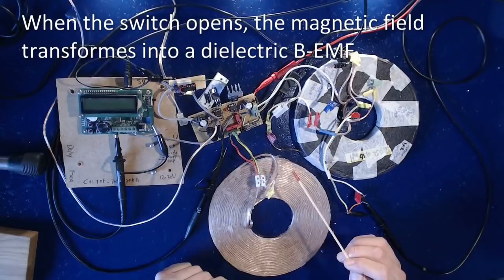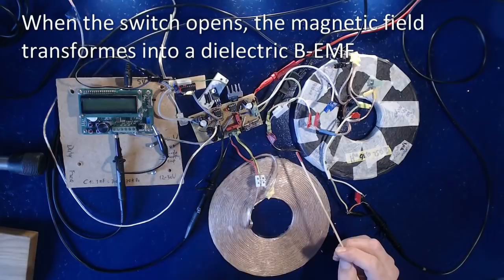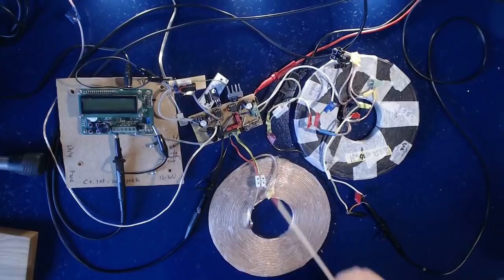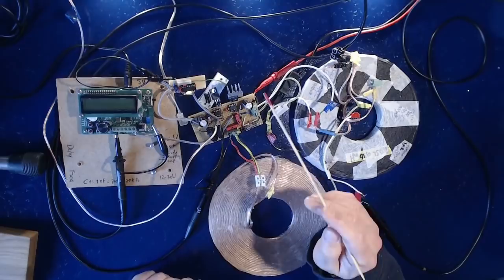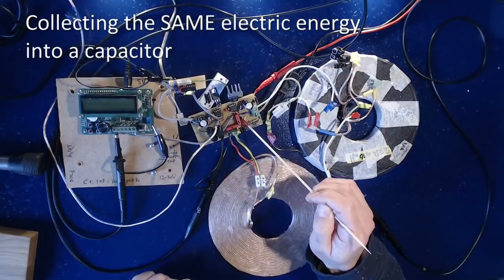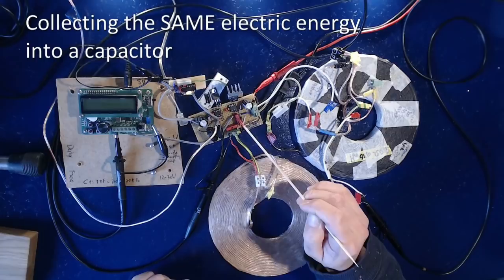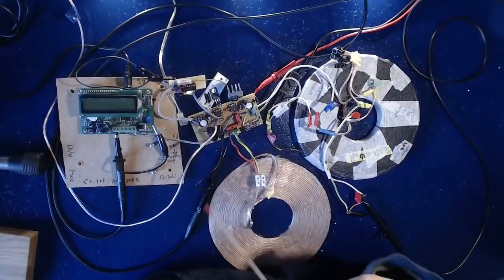The magnetic field when it collapses, when the MOSFET is turned off, it transforms back into a dielectric field. So what I am doing now here in this circuit is when the MOSFET turns off and the magnetic field of the first coil collapses, it produces a back EMF. And I am now collecting that back EMF via a very fast diode into my first capacitor, 10 nF in this case. And then it's stored and I can reuse it whenever I want.